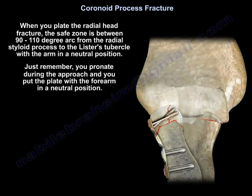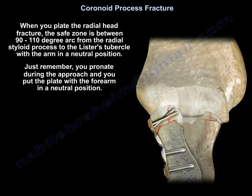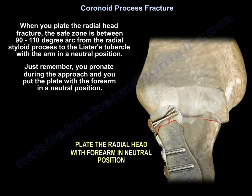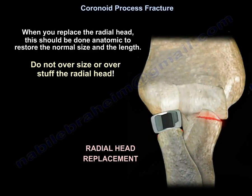When you plate the radial head fracture, the safe zone is between a 90 to 110 degree arc from the radial styloid process to the Lister tubercle with the arm in a neutral position. Remember, you pronate during the approach and put the plate with the forearm in a neutral position. When you replace the radial head, it should be anatomic to restore the normal size and length. When you do radial head replacement, do not oversize or overstuff the radial head.